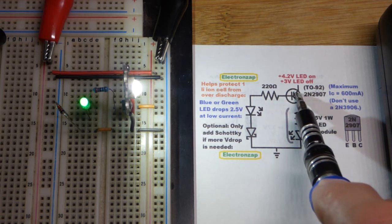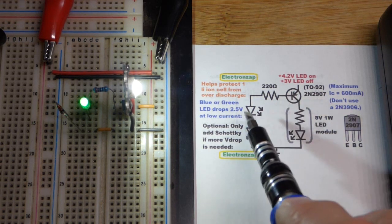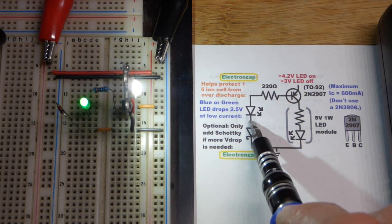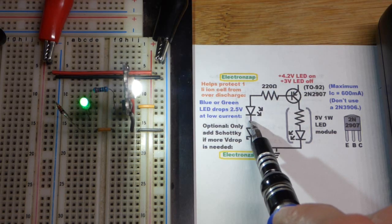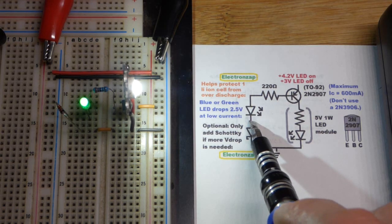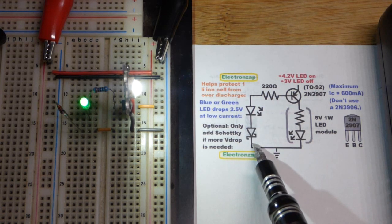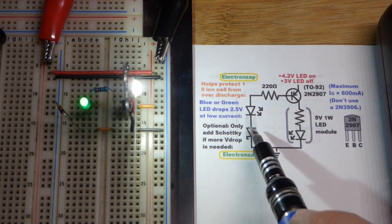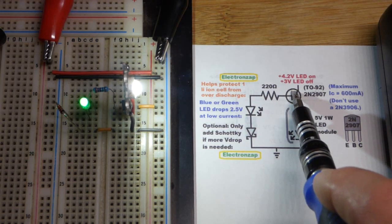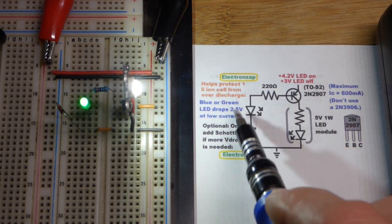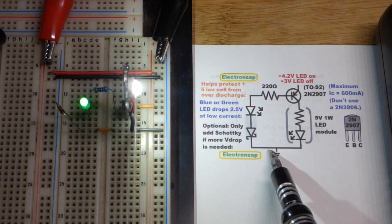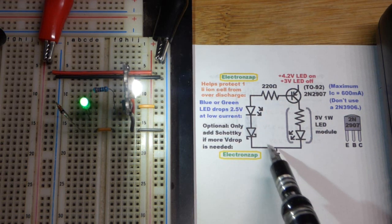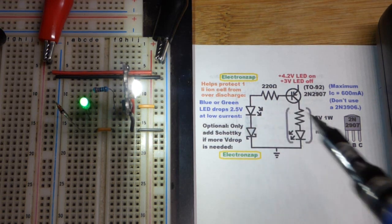You lose about 0.6 volts from the emitter to base, approximately. A green LED that we have there is going to drop about 2.5 volts at low current, closer to 3 volts at higher current. But we're purposely trying to keep current low here. And we also have a Schottky diode right there. So depending on what voltage you want, you add up the voltage drops.